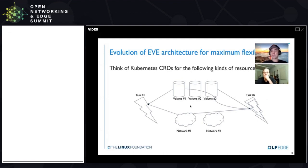We give you a pretty flexible way of managing volumes — that's basically storage management. The second type of resource is network. We abstract away all of the complexity of networks. For example, you can say: I want a network connected to an Amazon VPC with the following set of credentials, and EVE will just instantiate that network and make it available on the system.